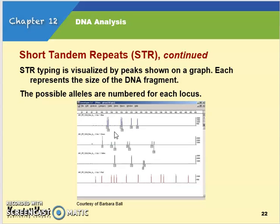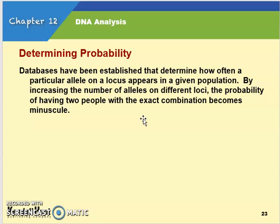STR typing is visualized by peaks shown on a graph, where each peak represents the size of the DNA fragment, and possible alleles are numbered for each locus. By continuing the process with additional STRs from other genes, you can narrow down the probability of DNA belonging to only one person. The likelihood of someone having the exact same STR genes from different parents is very unlikely.